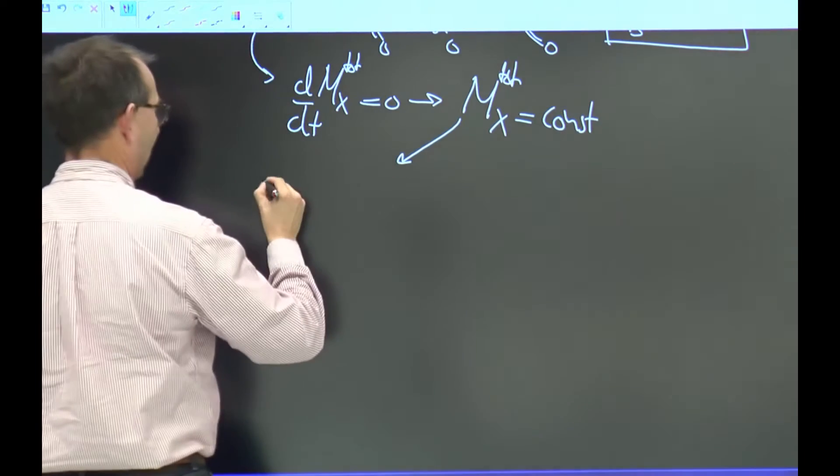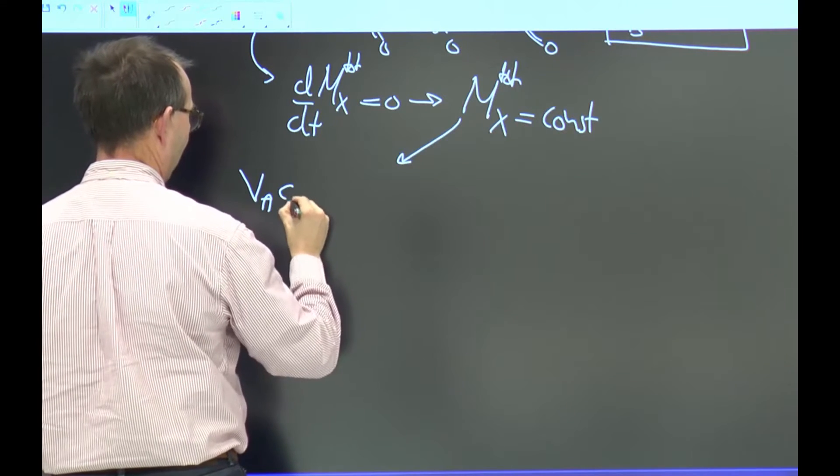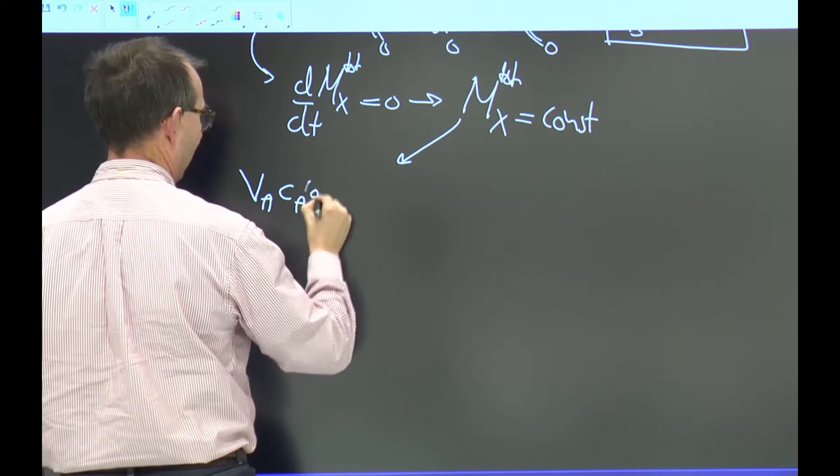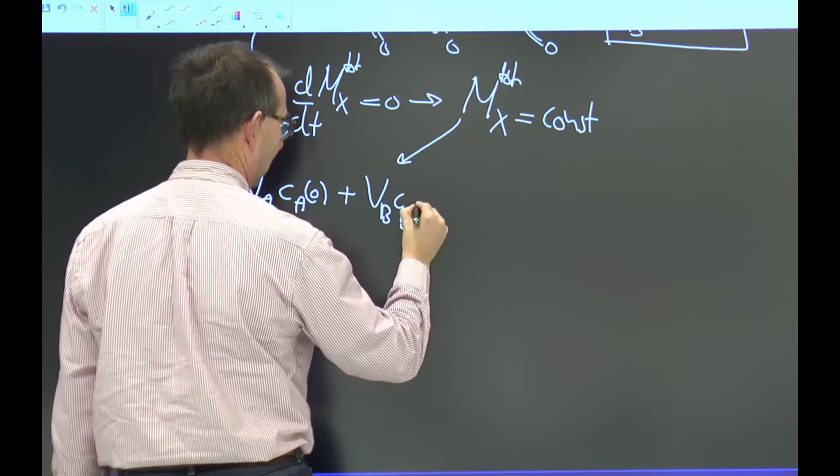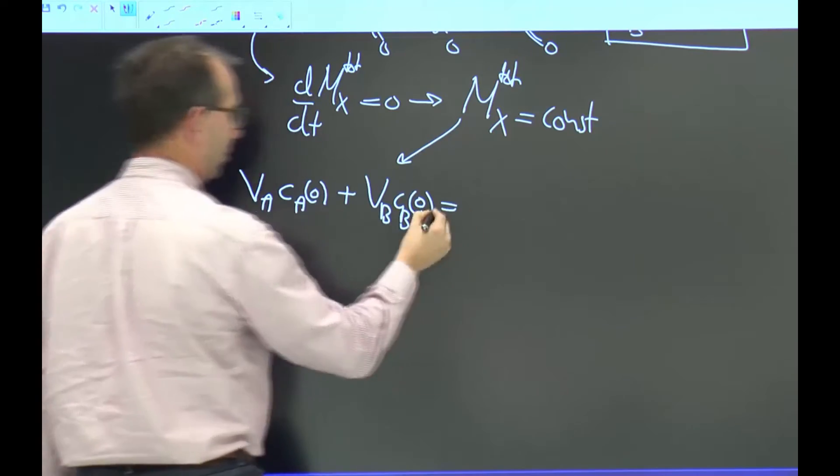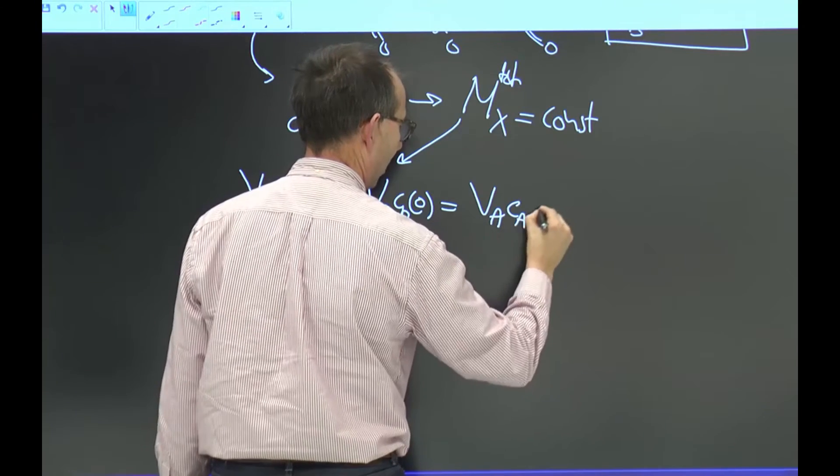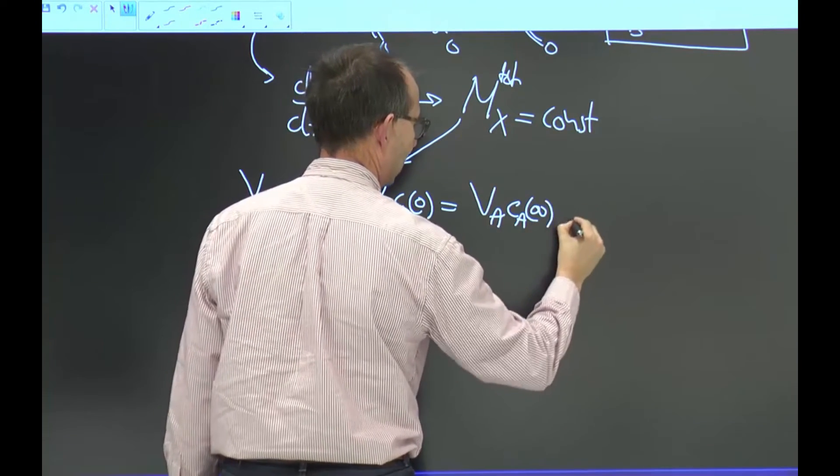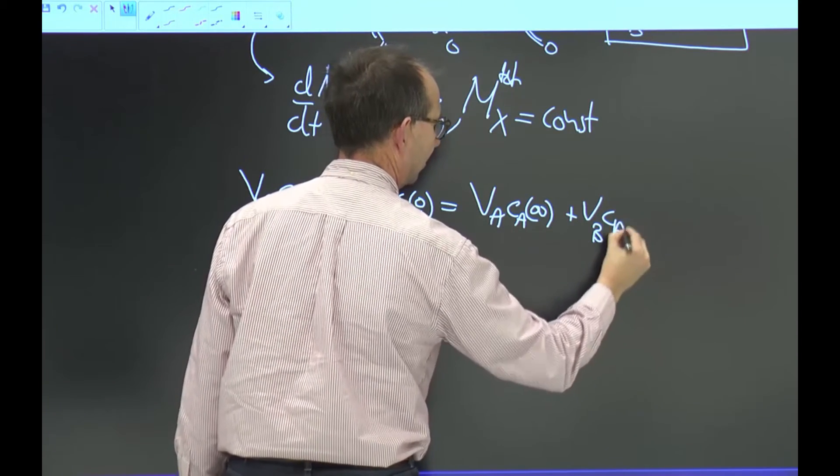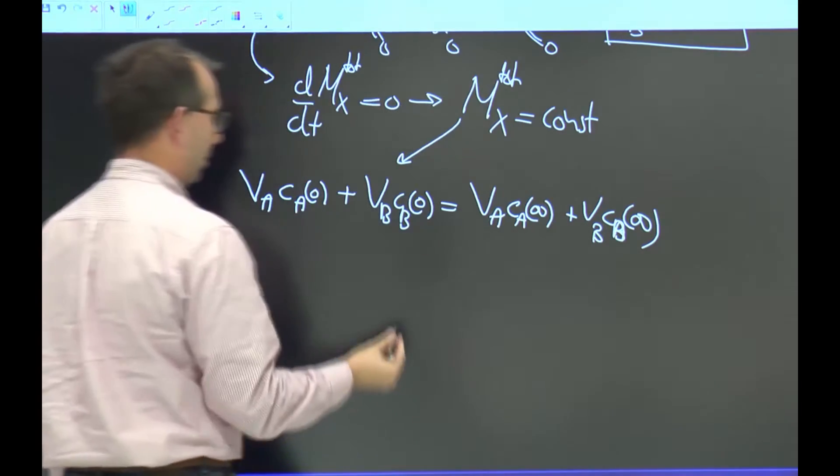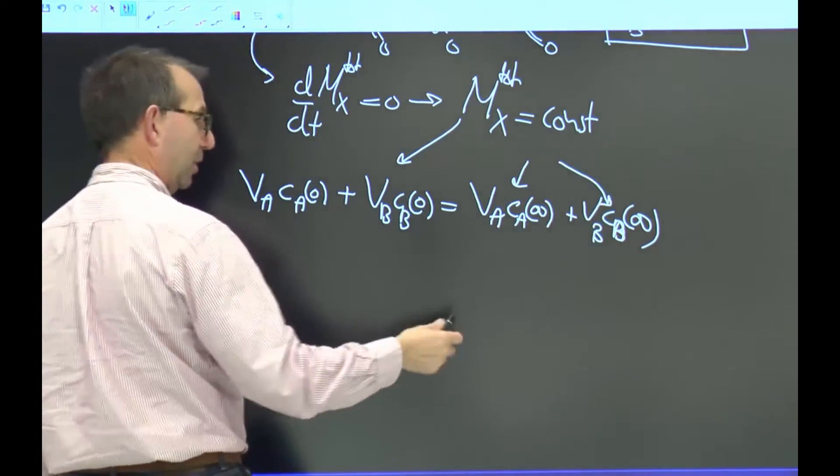I can write this. At t equals zero, I have the volume of A times the concentration of X in A at zero plus the volume of B times the concentration of B at zero. So, this is the total mass present. And that stays present also at the end. So, at t is infinity, I get the same type of expression. B infinity. Alright. This is one equation for two unknowns.